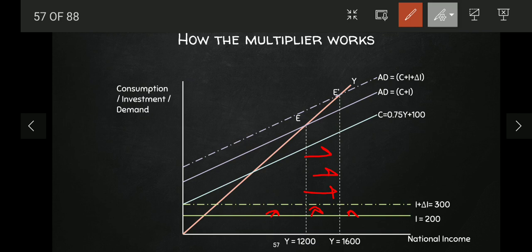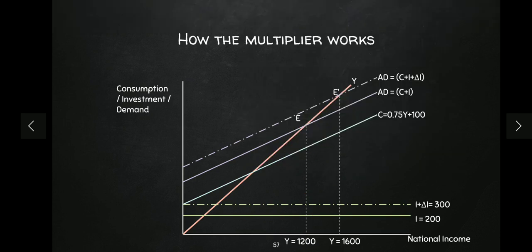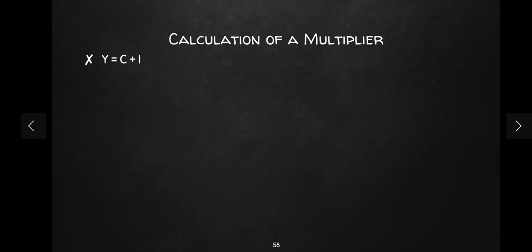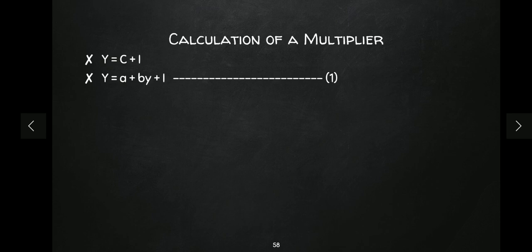Now we want to find the value of multiplier m algebraically. Starting with Y = C + I, we write Y = a + bY + I — this is Equation 1. When investment increases by delta I, national income becomes Y + delta Y. We substitute the new values: (Y + delta Y) = a + b(Y + delta Y) + (I + delta I) — this is Equation 2.